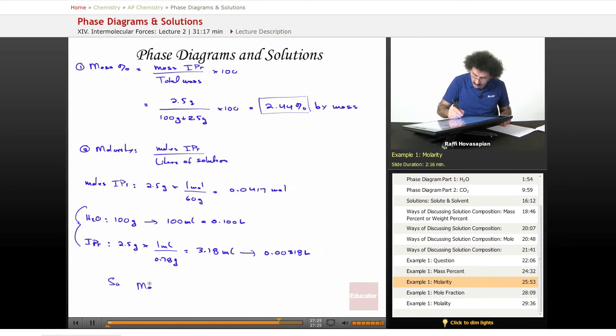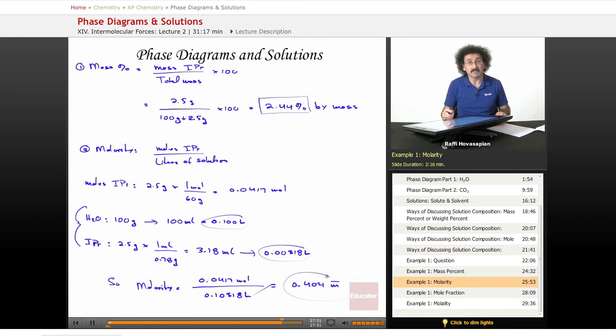So our molarity is equal to the moles 0.0417 mole divided by this plus this, 0.10318 liter, and we end up with 0.404 molarity. That means for every liter of solution, it contains 0.404 moles of that isopropanol.